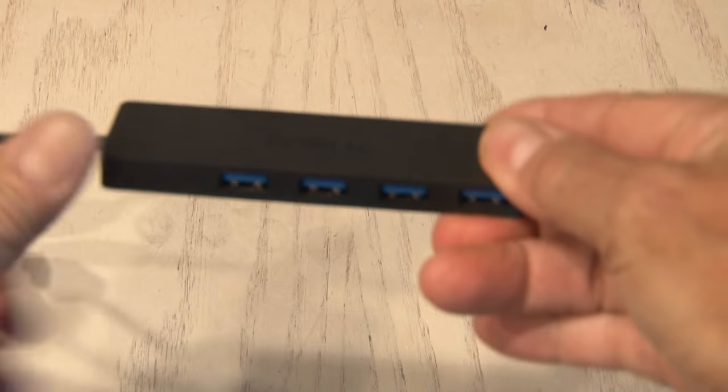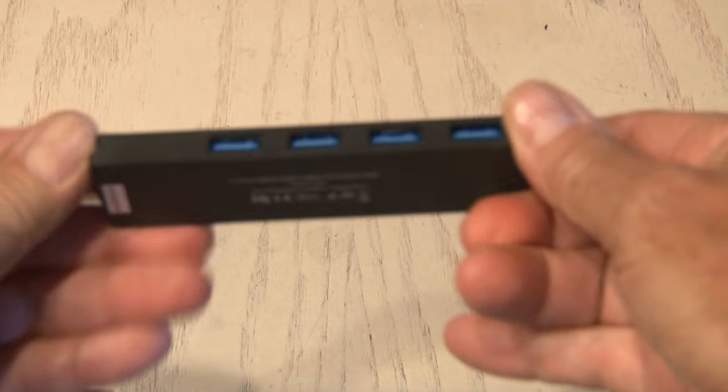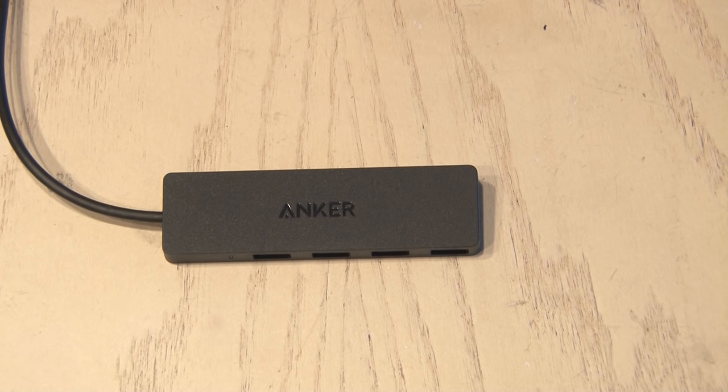Okay, now we get to the main component of this VHS tape hack. It's an ultra-slim 4-port USB hub. Now this is really inexpensive online. In fact, there's a link in the description if you want to pick one of these up.